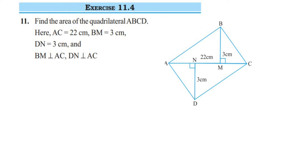Hey everyone, here is a question from exercise 11.4, 11th question. This is the last question of this exercise in this chapter. This is the perimeter and area chapter of class 7. And the question is: find the area of quadrilateral ABCD.